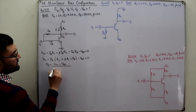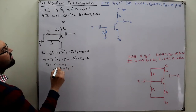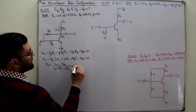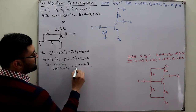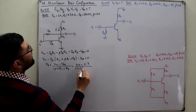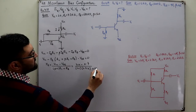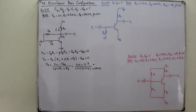So IB comes out to be VCC minus VBE, divided by (beta + 1)·RC plus RB. Putting in the values: VCC is 20V, VBE is 0.7V for silicon, beta is 120, so (121 × 4.7k) + 680k. IB comes out to be 15.15 microamperes.